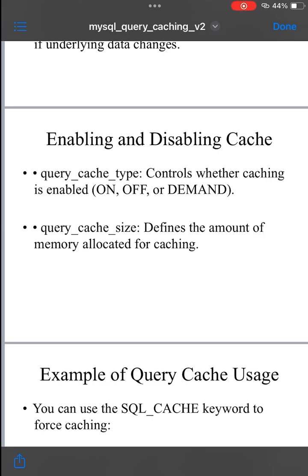It can also be set to 1 (on), which enables query caching, or 2 (demand), which enables query caching only when the query includes the SQL_CACHE keyword. Query cache size defines the amount of memory allocated to store cached query results. By default, MySQL may set this to 0, meaning query caching is disabled.